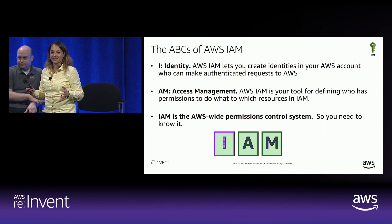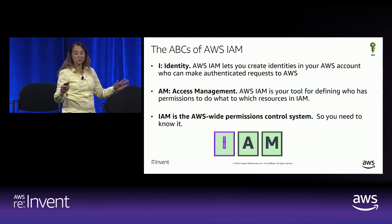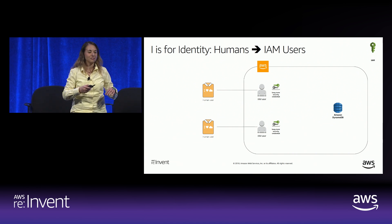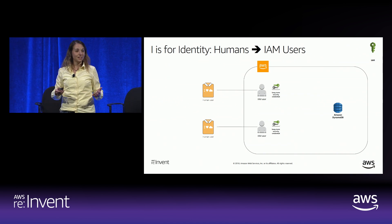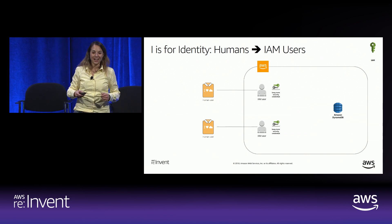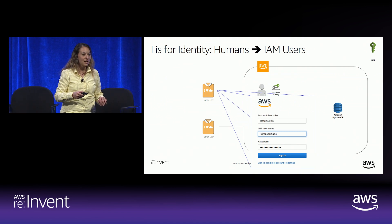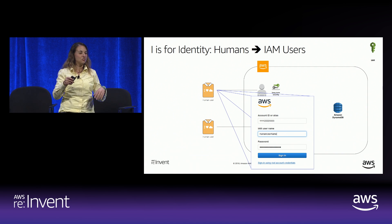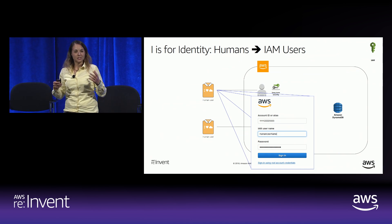IAM — Identity and Access Management. The I stands for authentication and the AM stands for authorization. It works everywhere. Almost all API calls to AWS require that the caller have an identity. One kind of identity is a human IAM user. If you've ever logged into the AWS console with a username and password, or used an access key ID and secret key to configure your CLI or SDK, you're using long-term credentials — these are IAM users, typically mapped to human users.